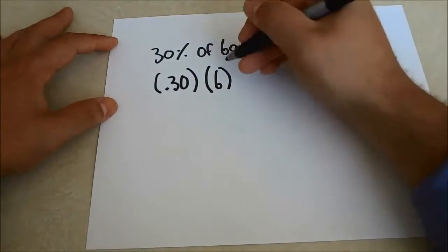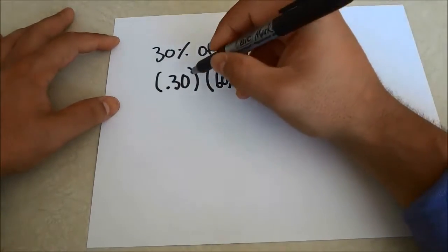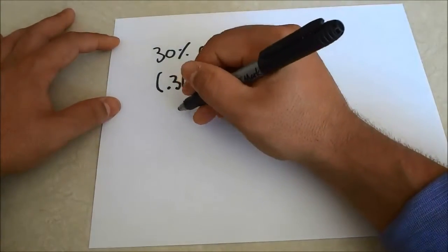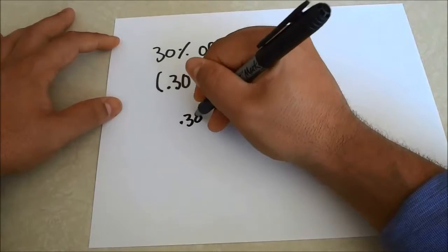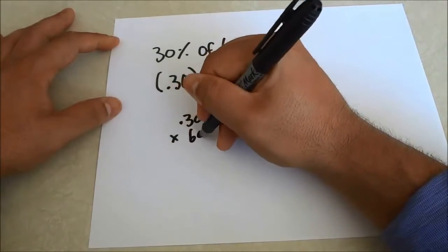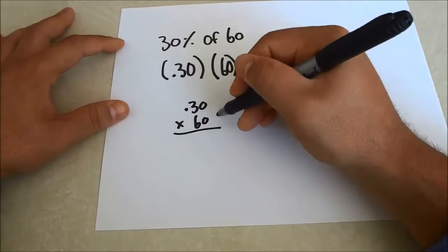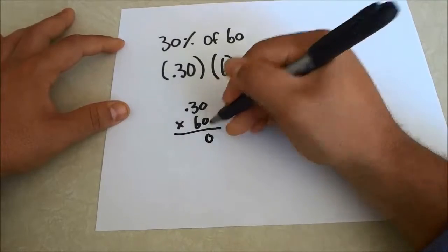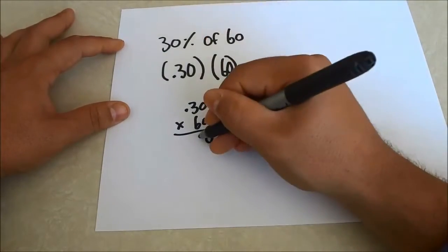If we take these two numbers and multiply them, we can get 0.30 times 60. So I'm going to start off by multiplying 0 times 0. That equals 0. 0 times 3. That equals 0.